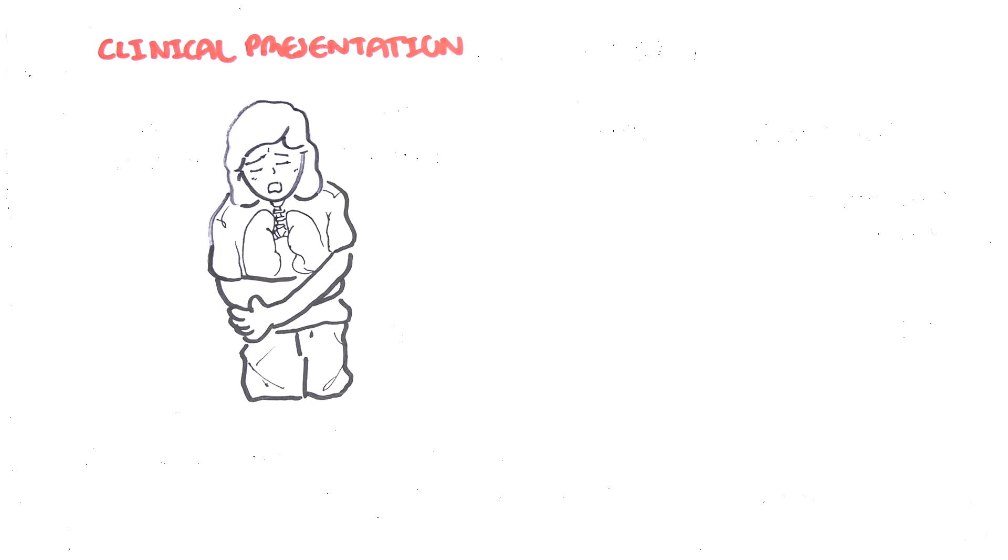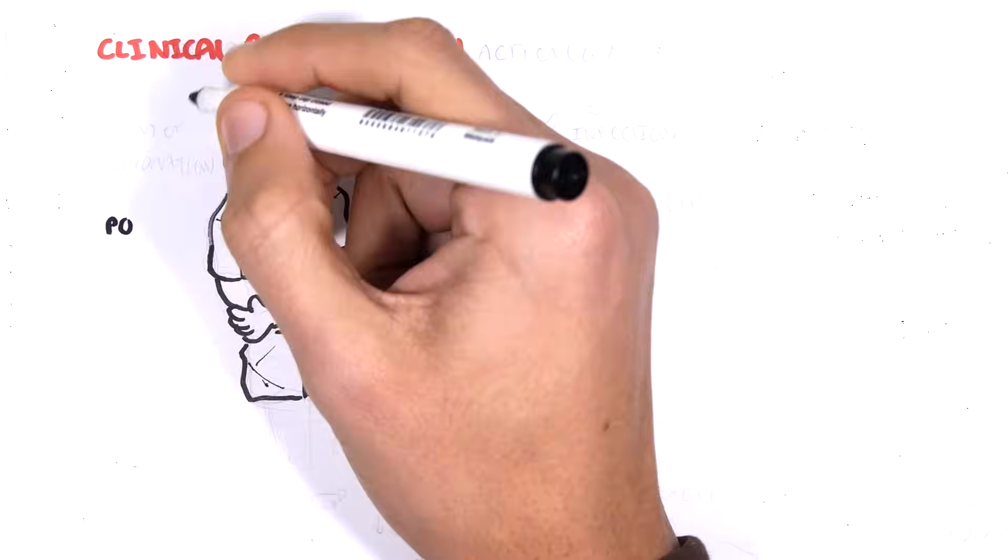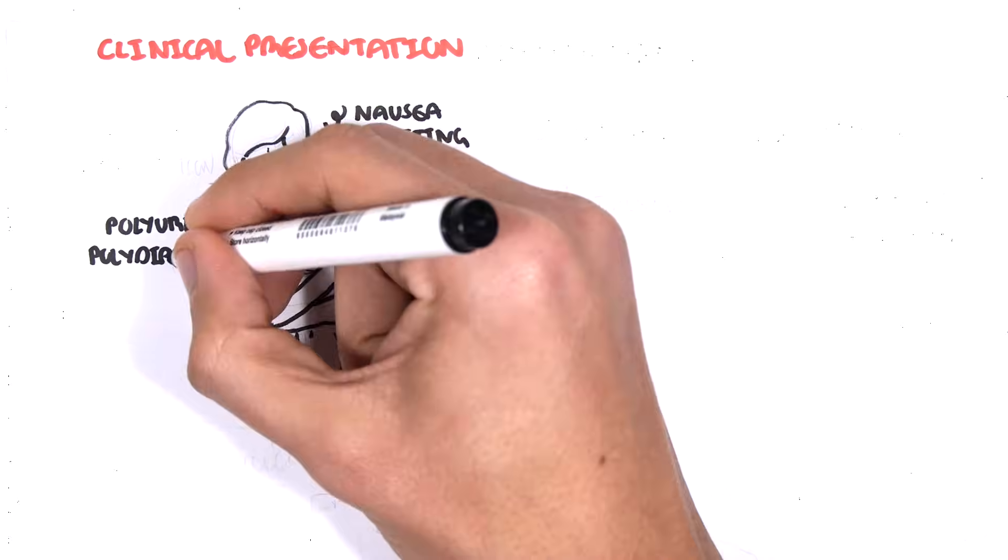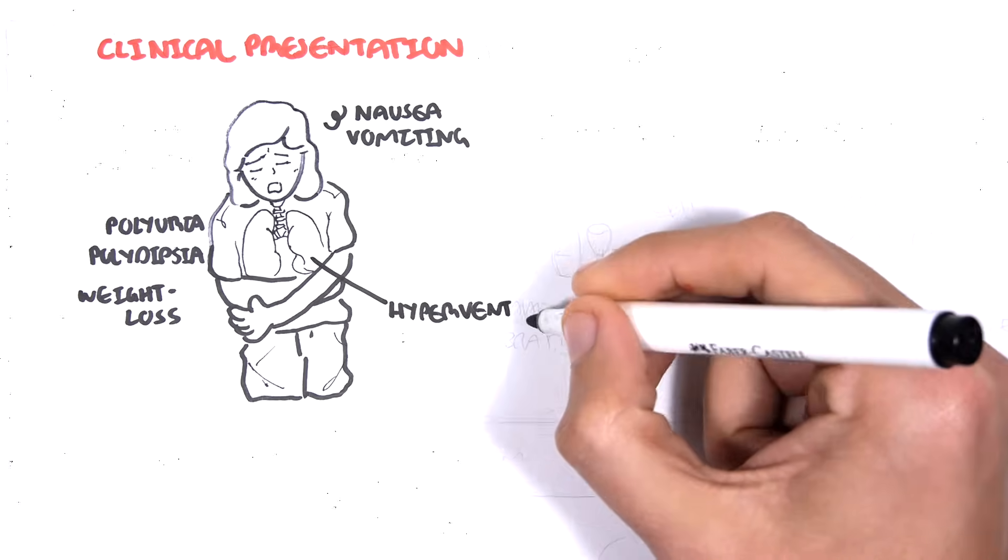The signs and symptoms of diabetic ketoacidosis are nausea, vomiting, polyuria, polydipsia, weight loss, hyperventilation, known as Kussmaul's breathing.